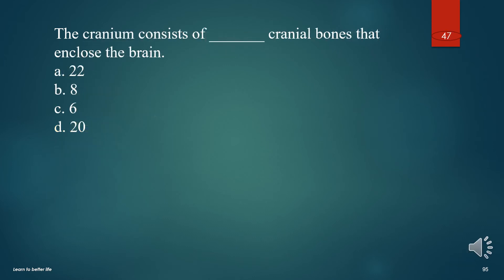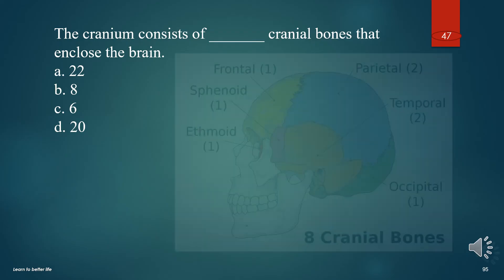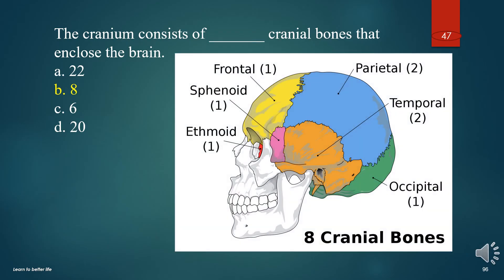The cranium consists of how many cranial bones that enclose the brain? A. 22. B. 8. C. 6. D. 20. The answer is B. 8.